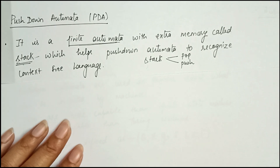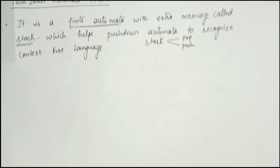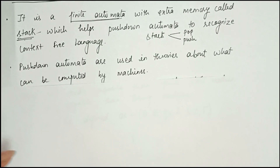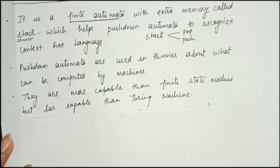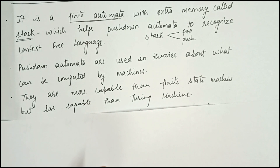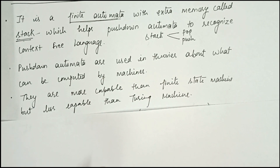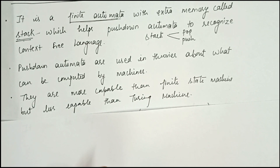PDAs are used in theories about what can be computed by machines. They are more capable than finite state machines but less capable than Turing machines. The Turing machine concept will be discussed in a future video, but PDAs are more capable of doing some computation than finite state machines.